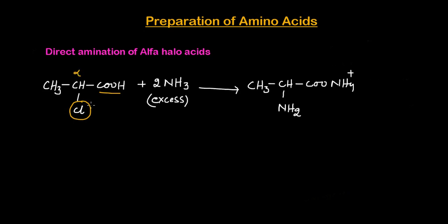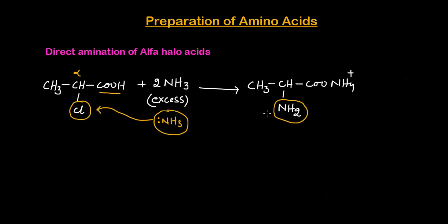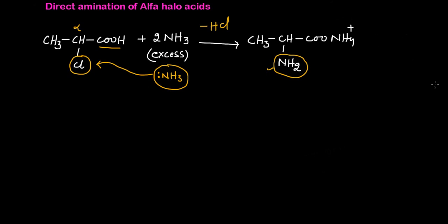The chloride present on the alpha carbon is replaced by the NH₂ group — this is a nucleophilic substitution reaction. The nucleophile here is NH₃, which replaces the chloride from the alpha carbon. We get this NH₂ group, and the rest of the ammonia is connected with the COOH group, giving us the ammonium salt of the alpha amino acid.